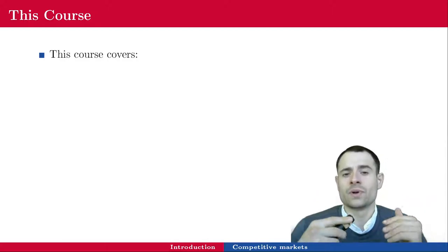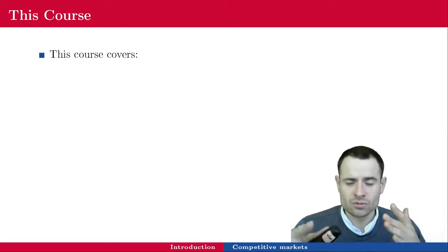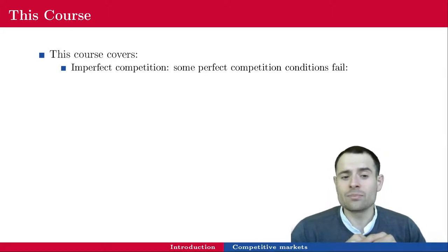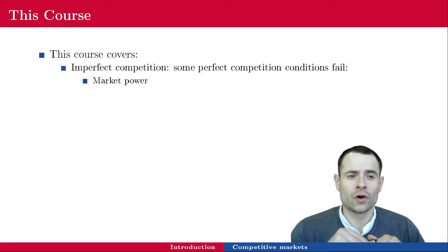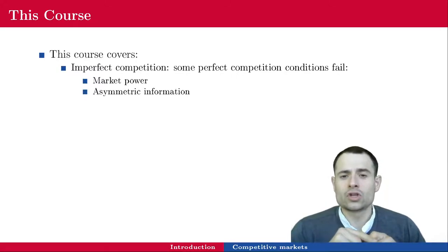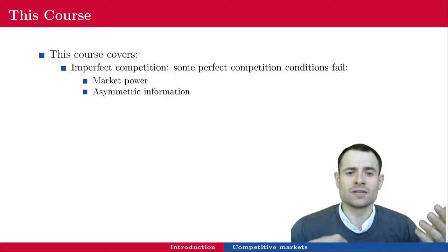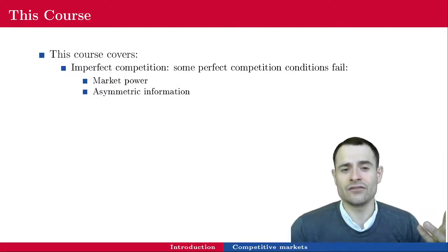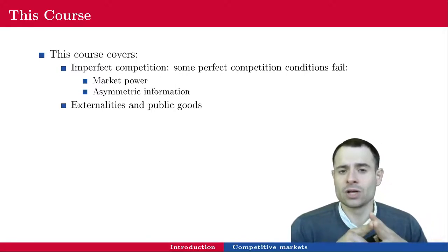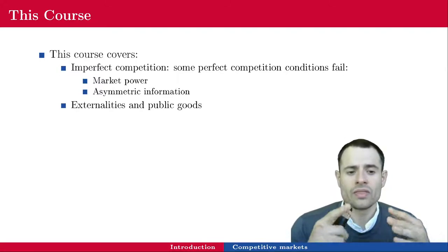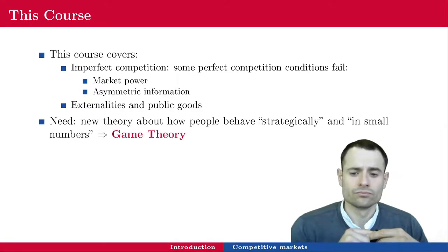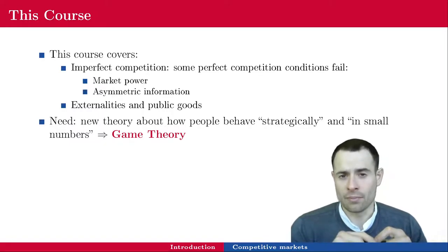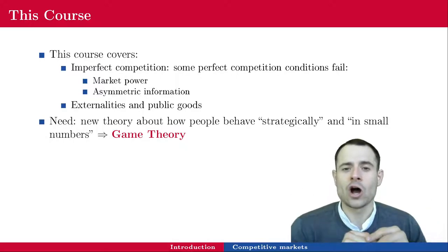In this course, we are going to violate perfect competition assumptions one by one and see how they affect market equilibrium outcomes. We are going to go over imperfect competition — giving market power to firms in the next lecture about monopoly. We are going to change the information structure and imagine one side of the market has information the other side doesn't, which threatens trade and leads to an inefficient outcome. We will also talk about externalities and public goods and how they lead to market failure. We will develop game theory to study how people behave strategically in small numbers.